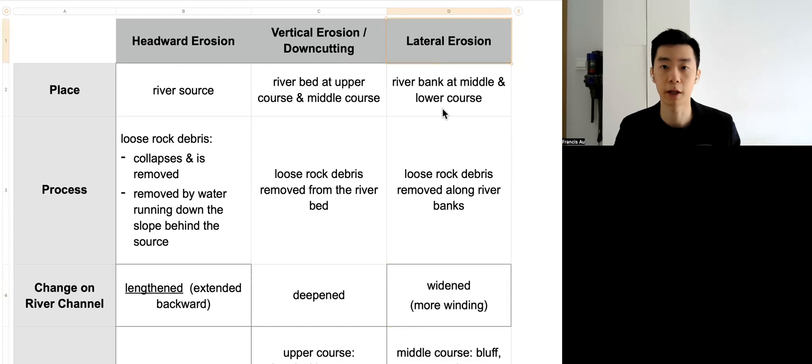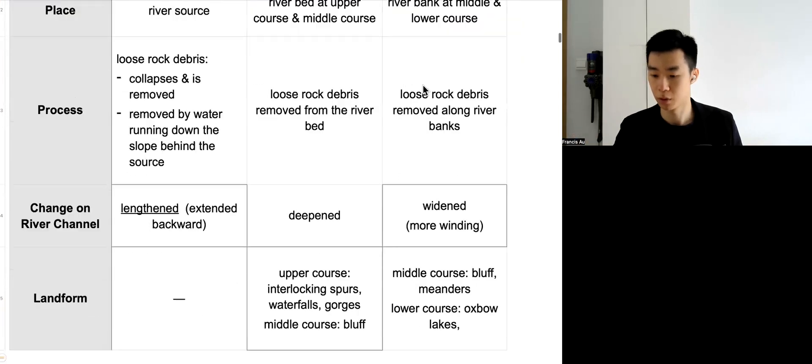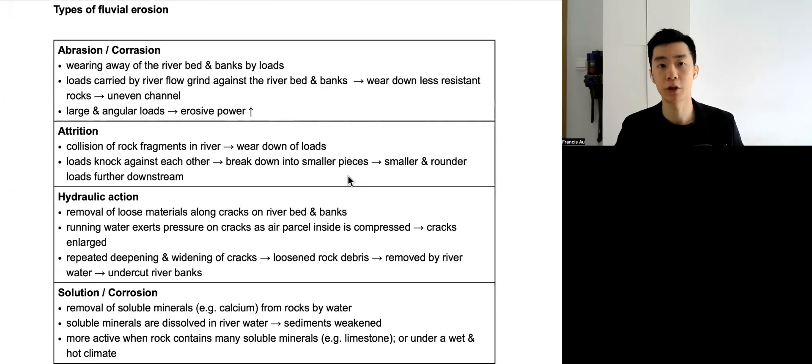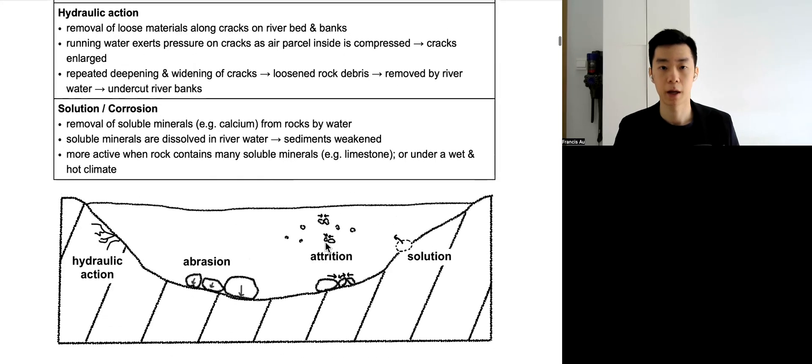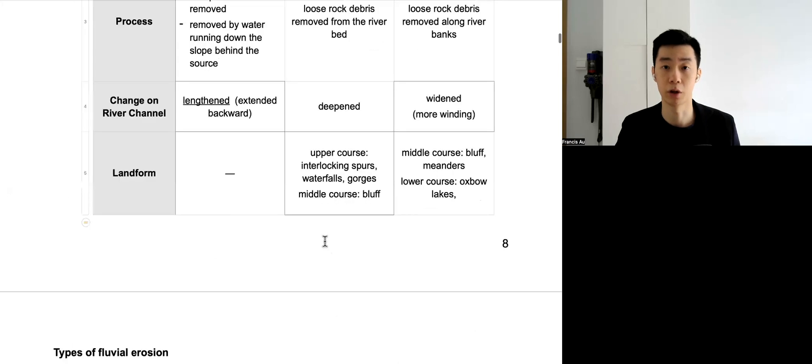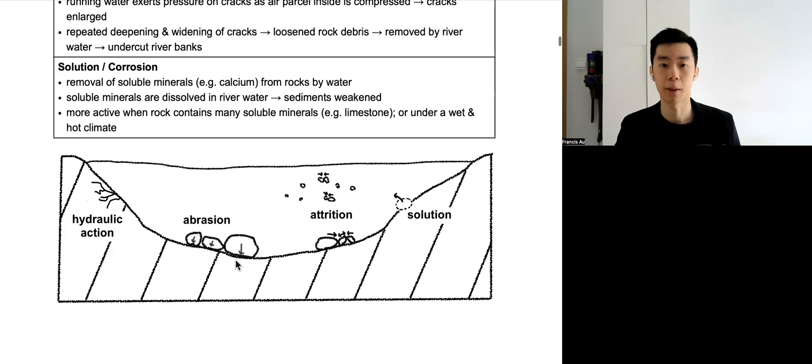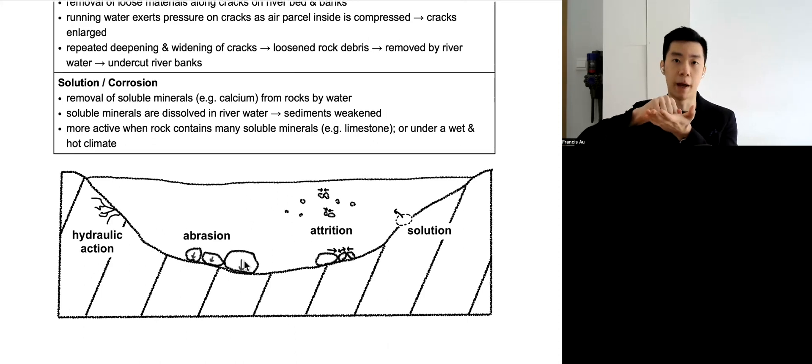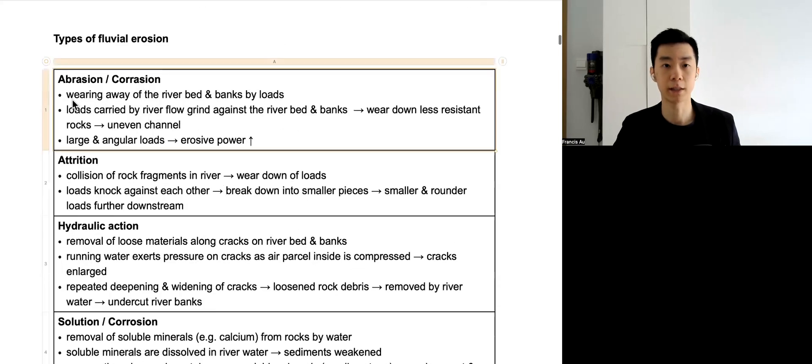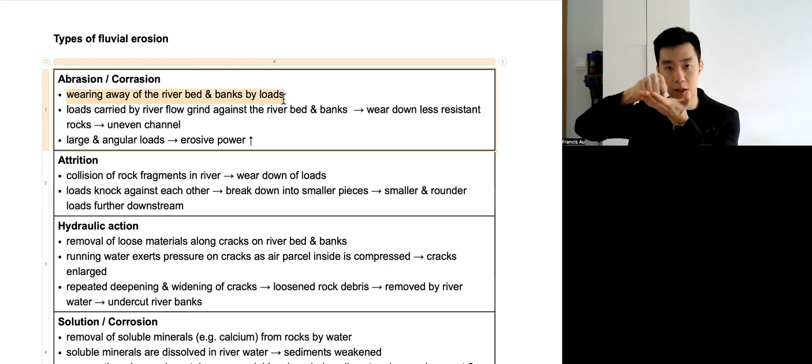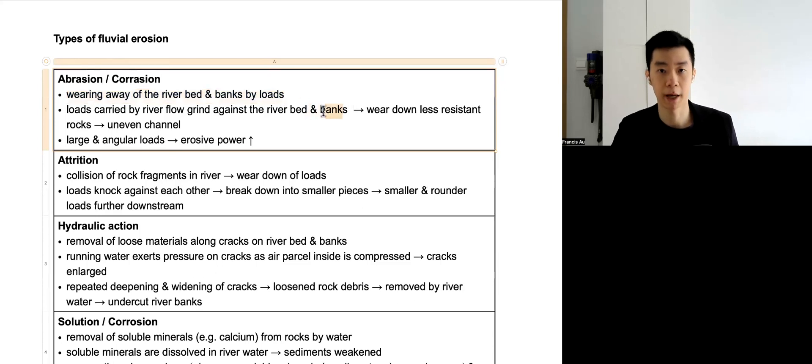Lateral erosion is eroding the river bank on both sides of the river. Then we have four major types of river erosion. Abrasion is the first one. Abrasion is mostly responsible for down cutting, vertical erosion, because it is about the big rock load eroding and grinding the river bed. It's the wearing away of river bed and river bank by the load. The rock against the river bed basically rubbing it, grinding it, removing and deepening the river bed. Could also be river banks. As a result, we have a deeper river channel - vertical erosion.